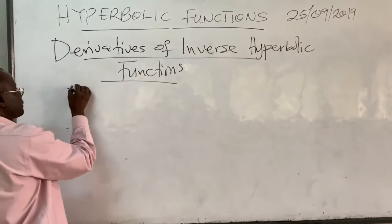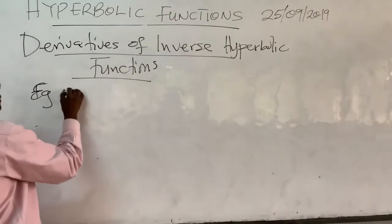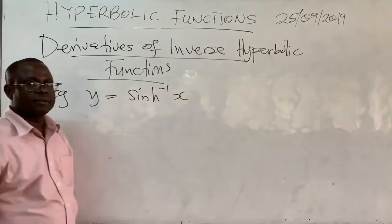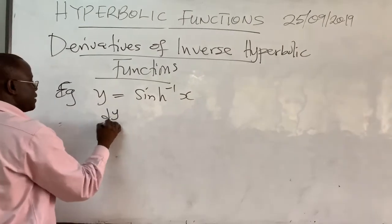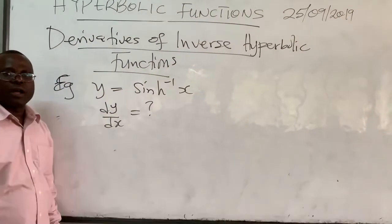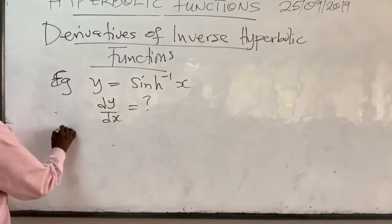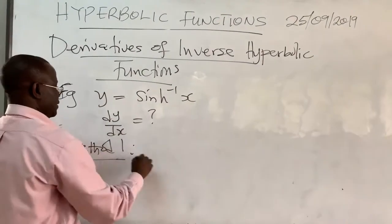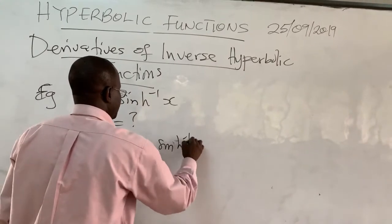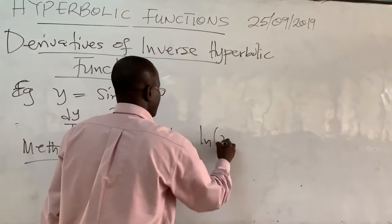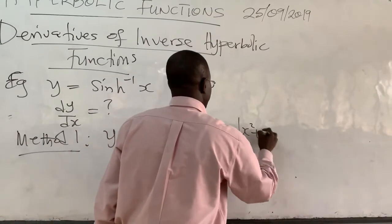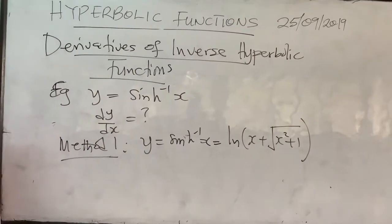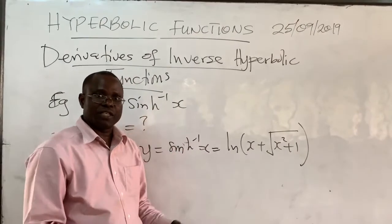For instance, given y equals sinh⁻¹(x), how do you find the derivative dy/dx? One way you can do it is to write the inverse sine hyperbolic of x as ln(x + √(x²+1)), as we found in the previous video. And since we know how to differentiate the ln function, it becomes relatively easy.